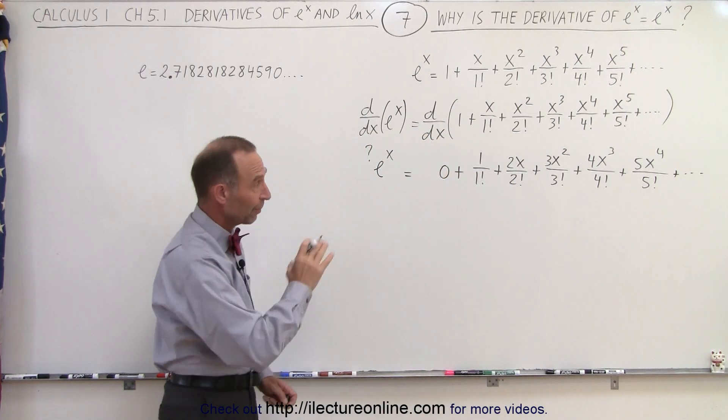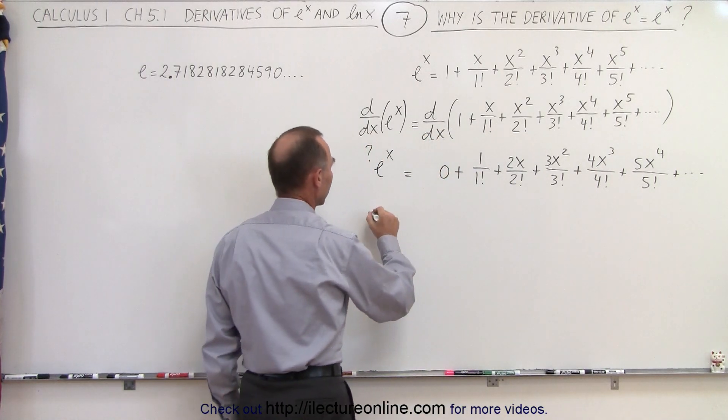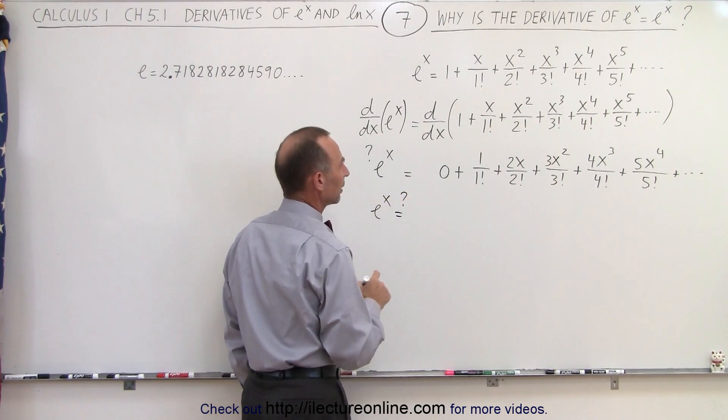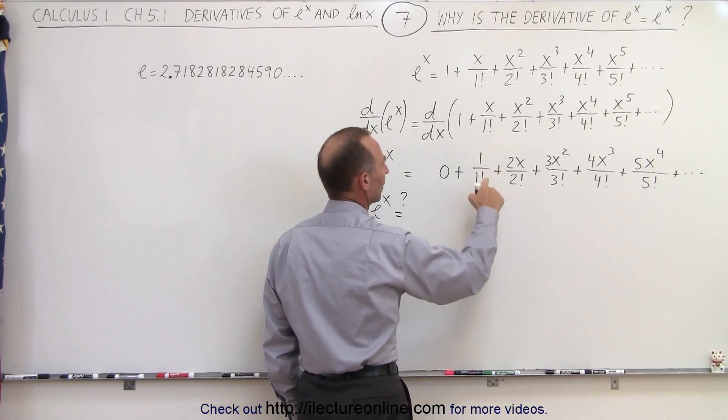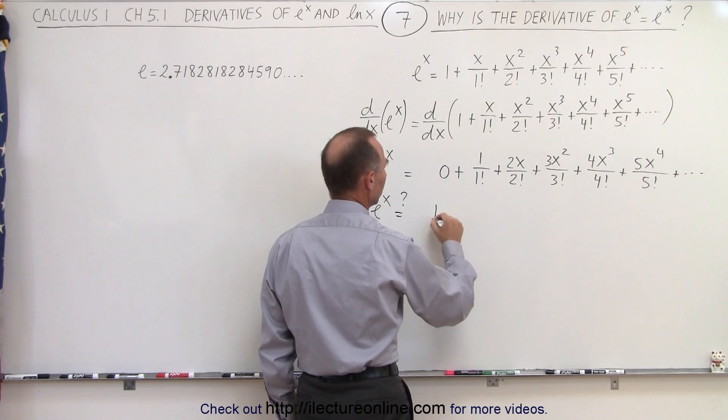Alright, now we're going to simplify that and see what we get. So e^x equals question mark. Well, here we have 1 divided by 1 factorial, which equals 1, plus...